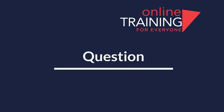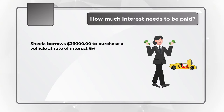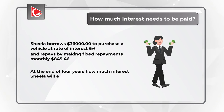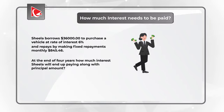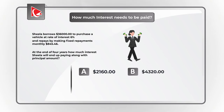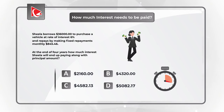Here is a very cool question which is frequently used to test your math skills. You need to determine how much interest should be paid. Sheila borrows $36,000 to purchase a vehicle at the rate of 6% and repays by making fixed payments monthly in the amount of $845.46. At the end of 4 years, how much interest will Sheila end up paying along with the principal amount? You have 4 choices: Choice A, $2,160; Choice B, $4,320; Choice C, $4,582.13; Choice D, $5,082.17. Give yourself a little bit of time — maybe pause this video to calculate the answer.